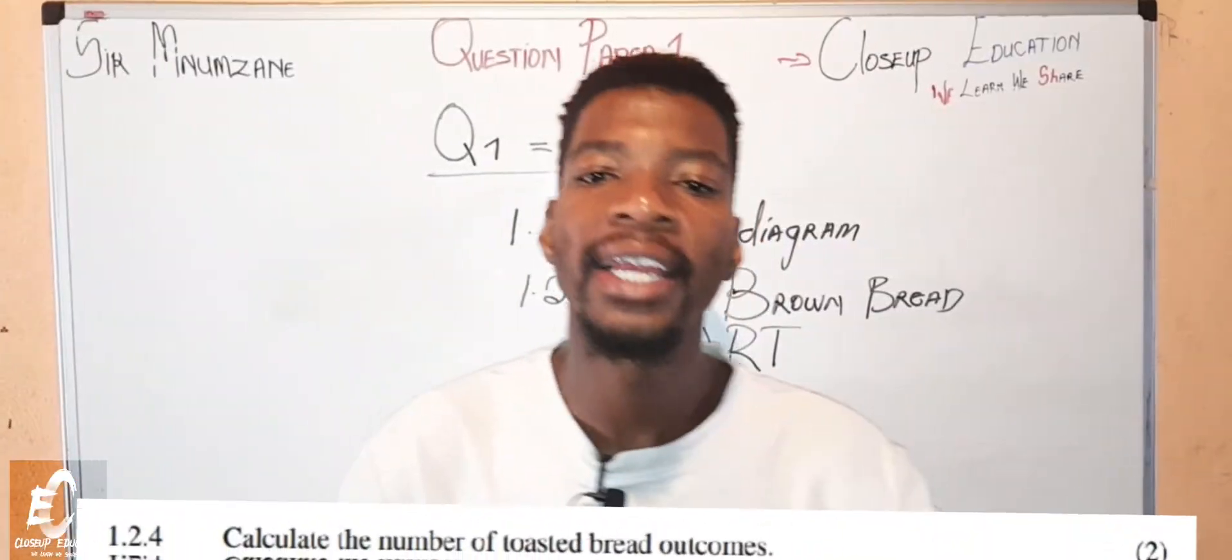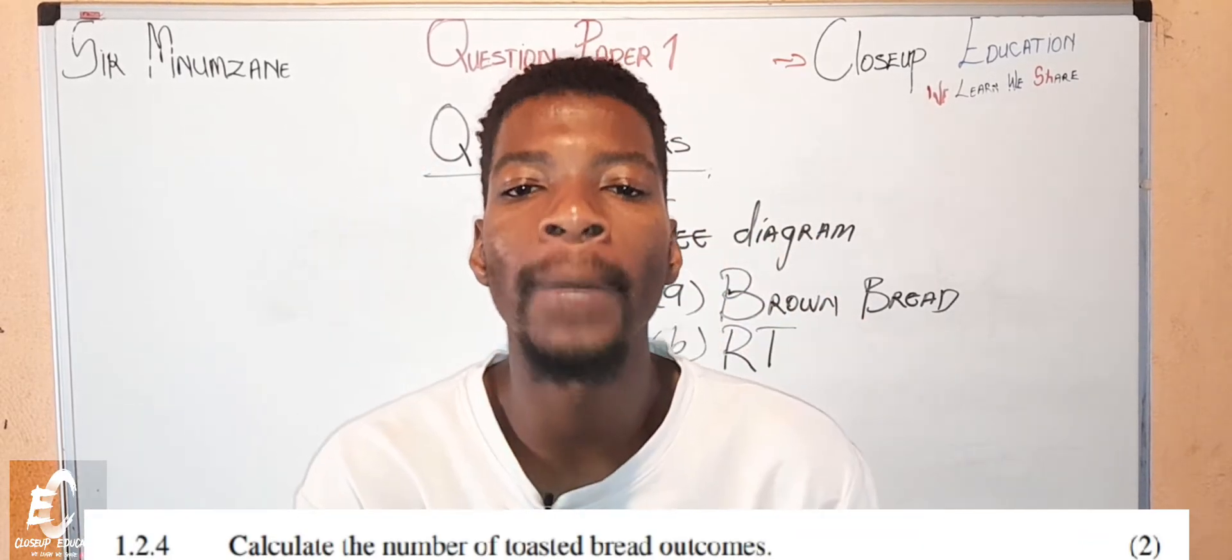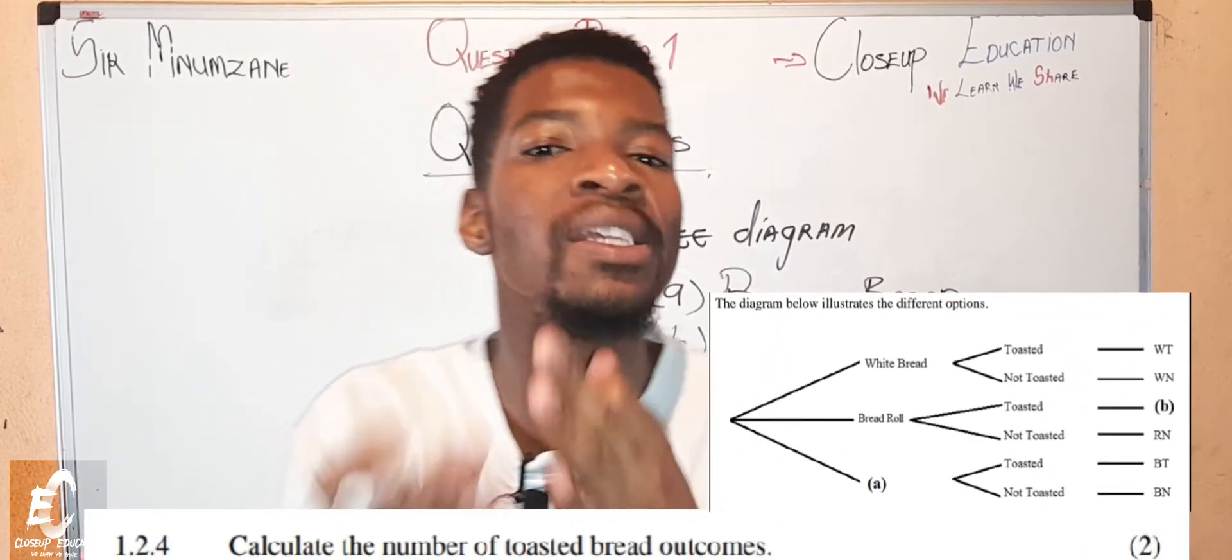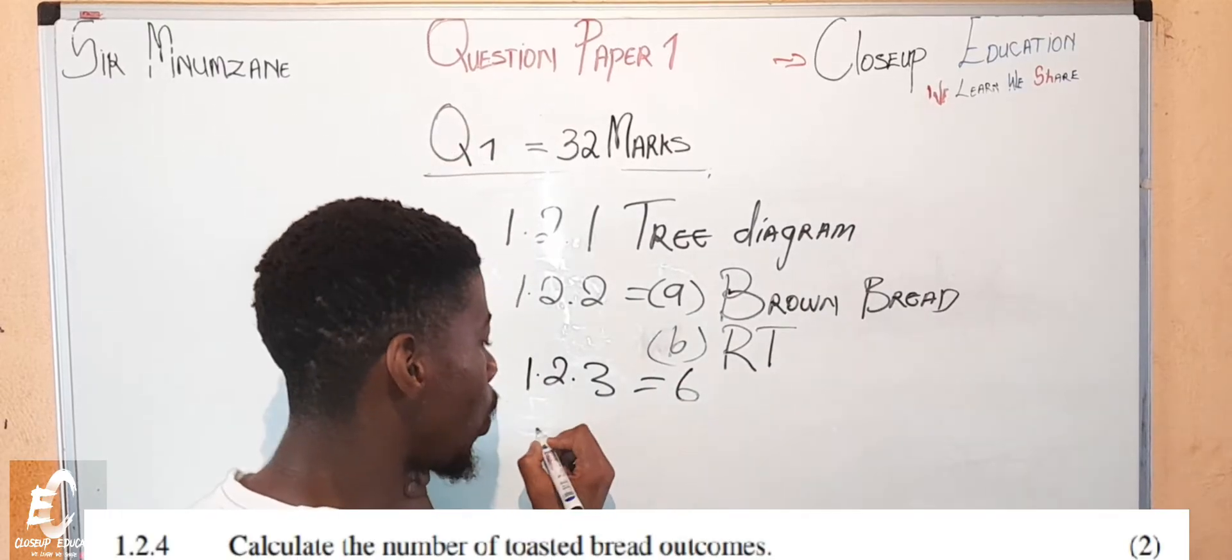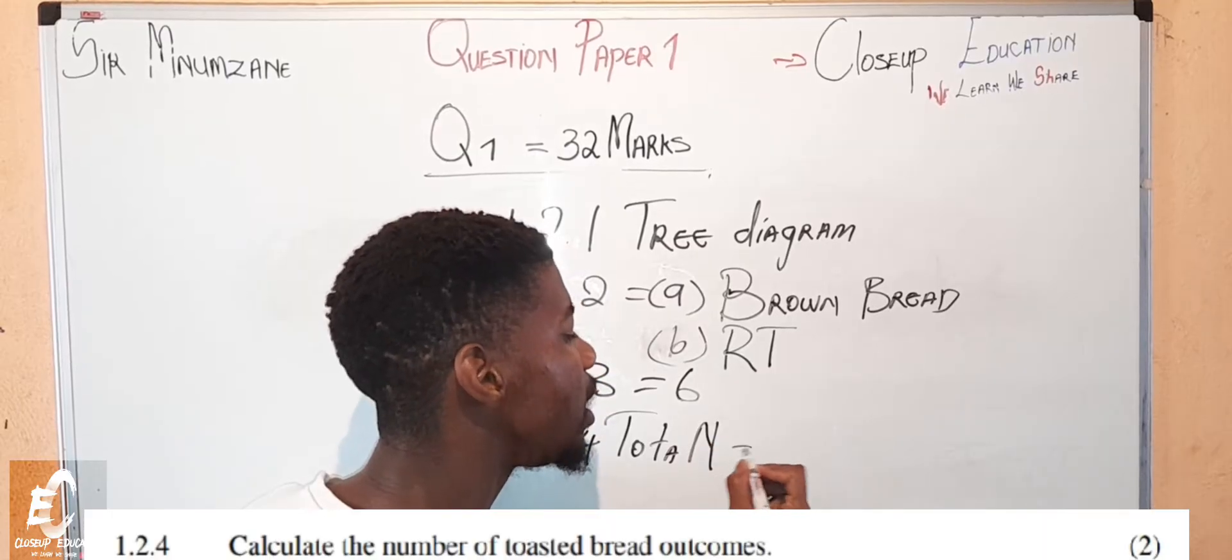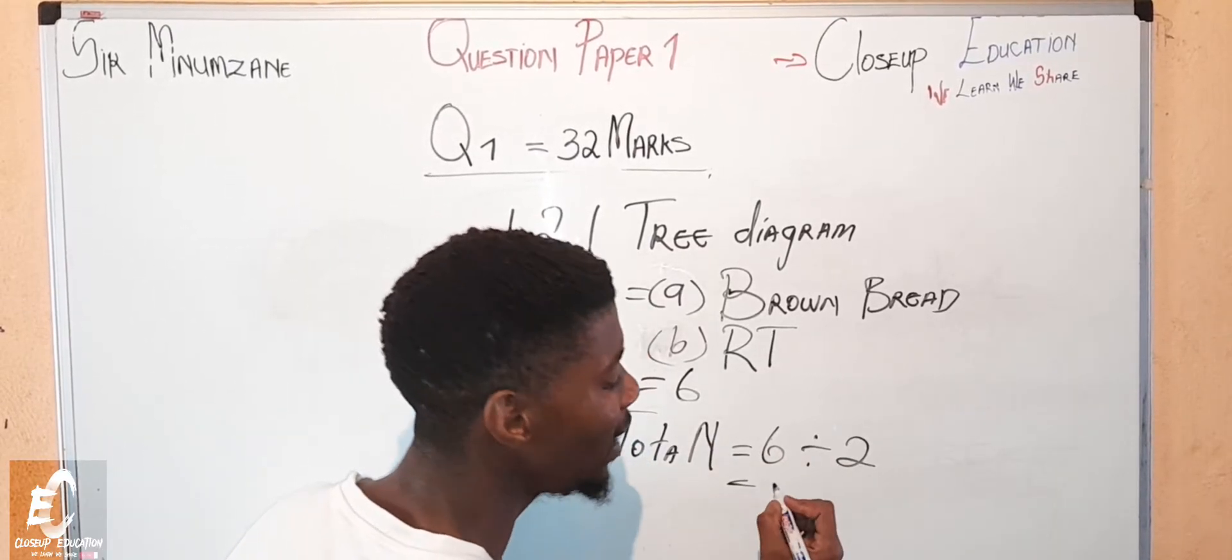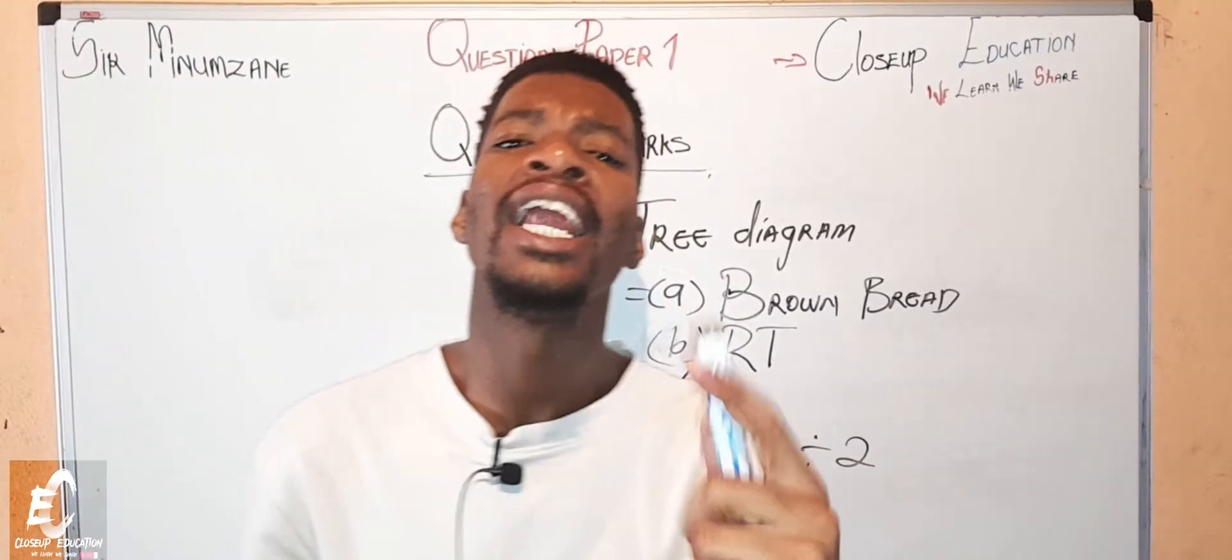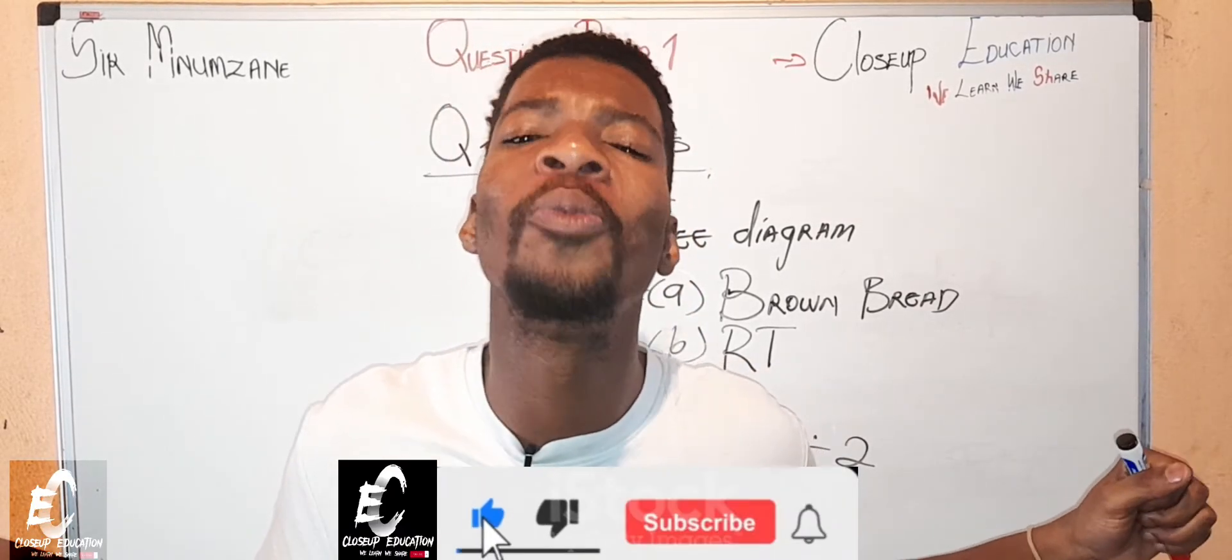Let's move to question 1.4. Question 1.4 simply says calculate the total number of toasted bread outcomes. It is very easy because we've already found our total number of outcomes. So we are going to say 1.2.4, total number which is equals to 6 divided by 2, and what are we finding? 3. There will be 3 breads that are toasted.